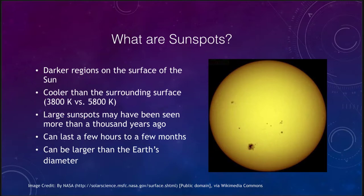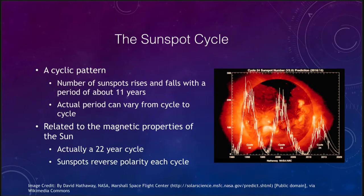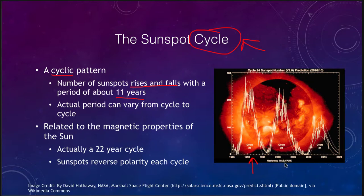The sunspots we see aren't random — they come and go in what we call the sunspot cycle. There is a cyclic pattern where the number of sunspots will rise and fall with a period of about 11 years. It's not precisely 11 years but it averages to 11 years over our observations, and it's a pretty good predictor over long-term time frames.